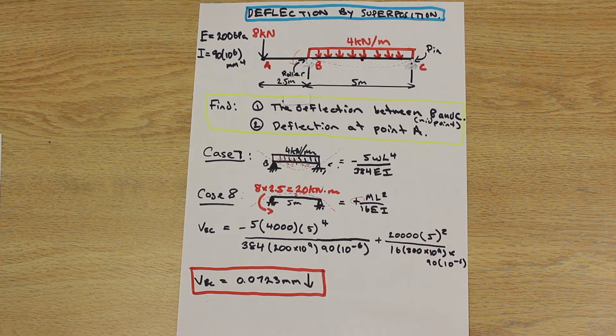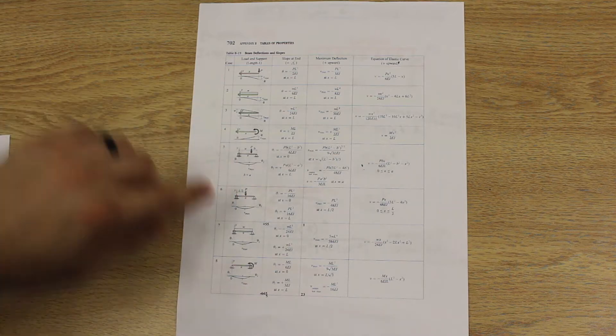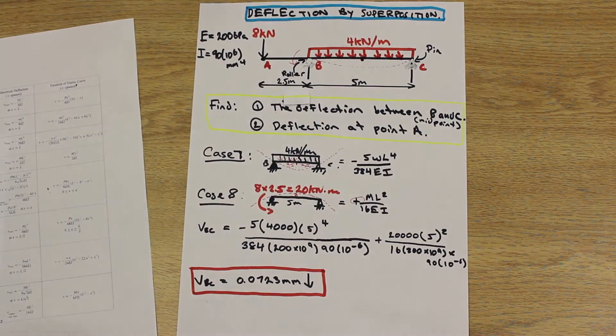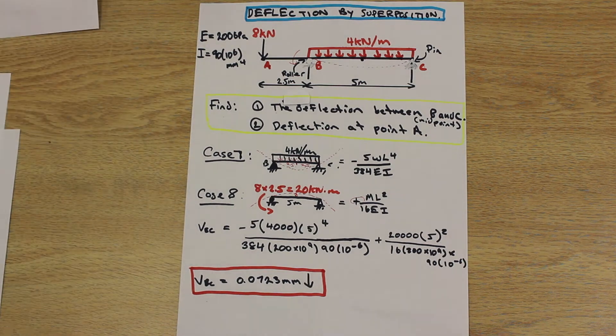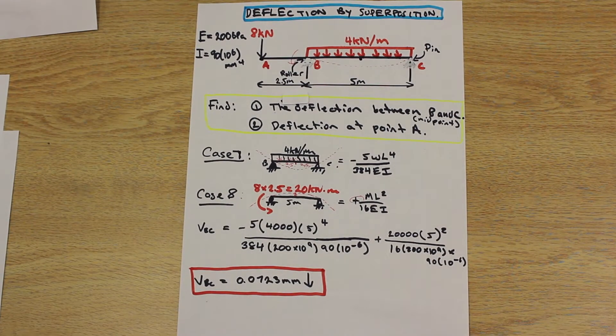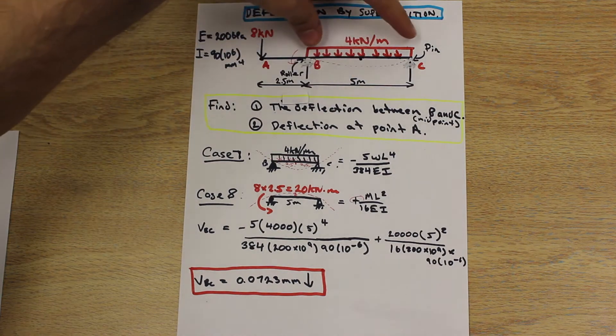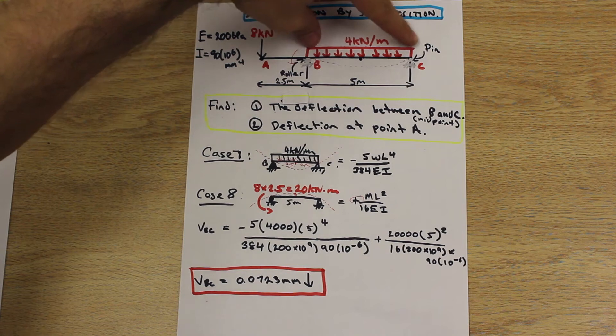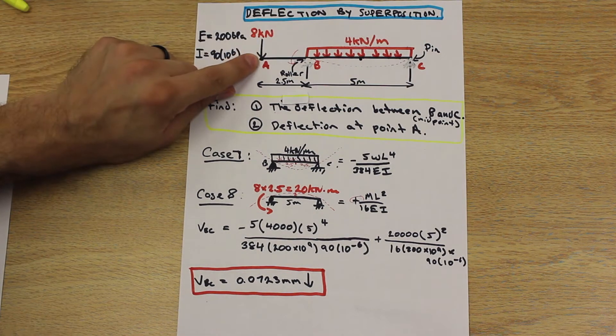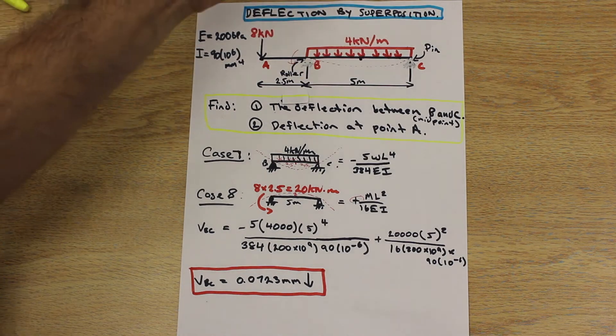I'm just going to put the table back on here, pull it to another window. Pause the video on this table and watch it while we're doing the problem so you can follow along with what we're doing, because I've written the cases down on another piece of paper that I'm going to bring over. Let's get started with the deflection at point A. We're going to take this distributed load here and see how it affects the deflection over here at this point.